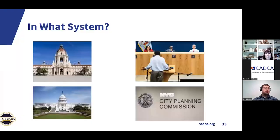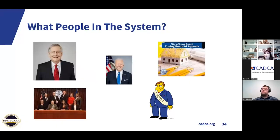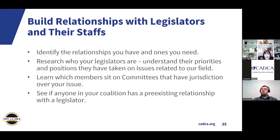Who has the power to make the change? What system — is it your county commission, your state legislature, the planning board, the zoning board, the school board? You need to understand the system and who in the system has the power to help you. You need to build relationships with elected officials at all levels of government and in all of the different systems where you're trying to make changes, and with their staffs. Staff people are so important — they're the ones that do most of the work for their bosses. You have to identify the relationships you have with your elected officials and the ones that you need, and research who your elected officials are and understand their priorities.